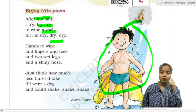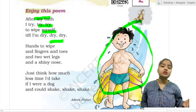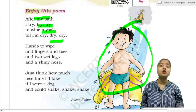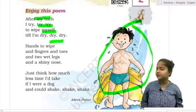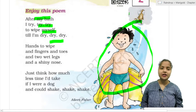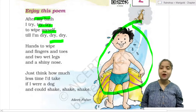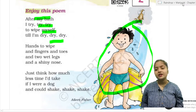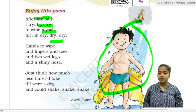Just think how much time I'd take if I were a dog and could shake, shake, shake. When the dog shakes, he shakes and gets dry. In that way, I also shake like this. The child is saying that I also shake like this and I will dry.